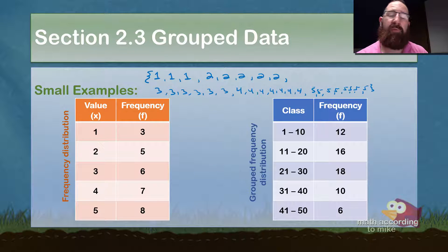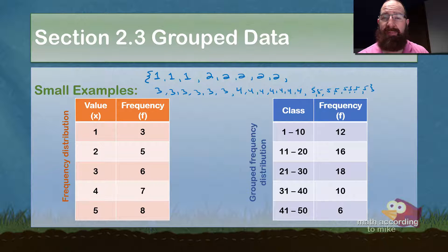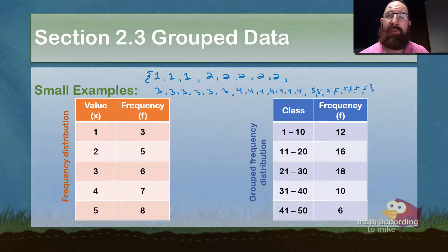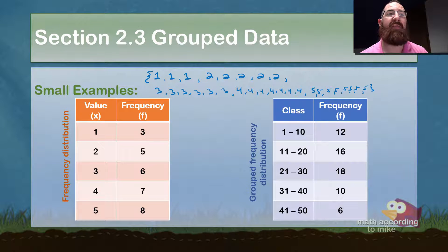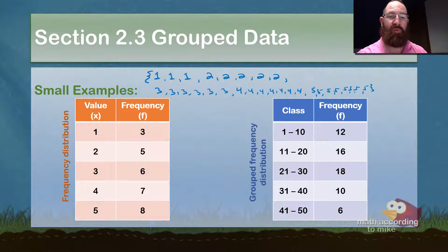You'll learn later on about error and things like that — well beyond the scope of our course. But for both of these types of scenarios, whether you're given the exact values in a frequency distribution or classes in a grouped frequency distribution, you will be finding the mean and standard deviation in this section. Please note that in the blue chart, there is no x — there's a class, but it does not list the variable x underneath it.